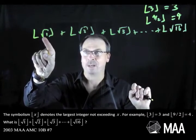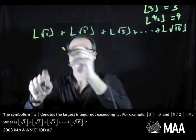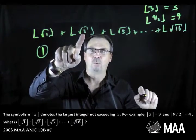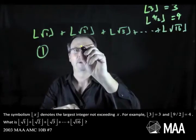For example, the square root of 1 is 1, and the biggest integer up to 1 is actually 1. So this guy equals 1. The square root of 2, that's about 1.4. So the biggest integer up to that would be 1 again.